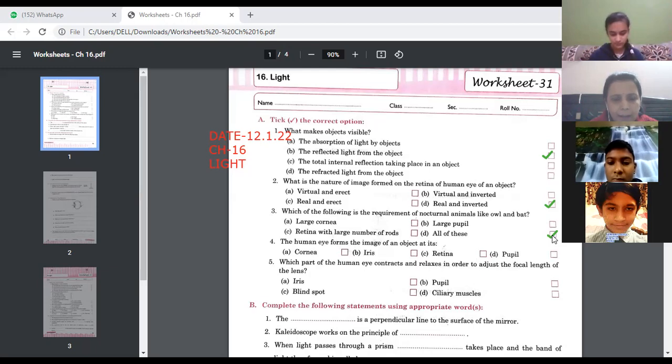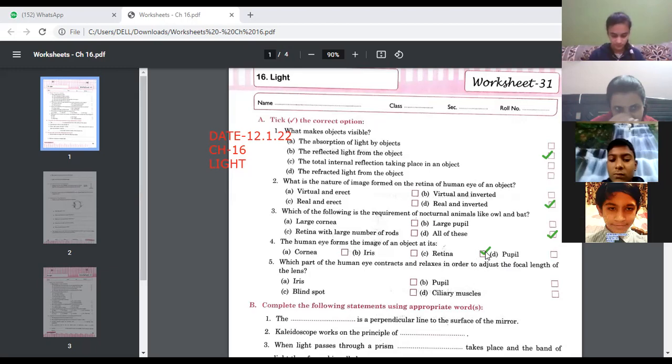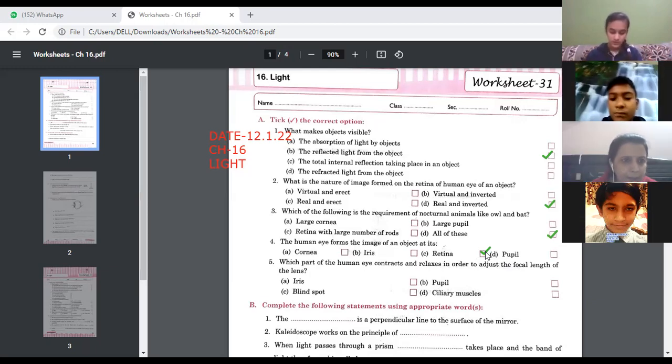Number four, the human eye forms the image of an object at its which part? Sarthak Singh, remember retina. The answer is C part, retina.